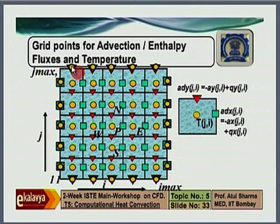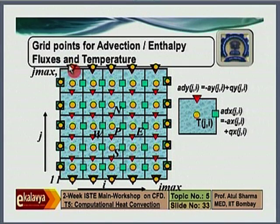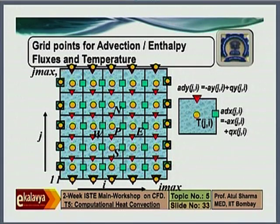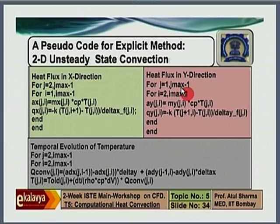We have 5 interior nodes and 2 boundary nodes, giving a total of 7 nodes. So for the last cell at the top, the last red inverted triangle, the running index corresponds to j_max minus 1. That is the reason it goes from 1 to j_max minus 1. Thank you.